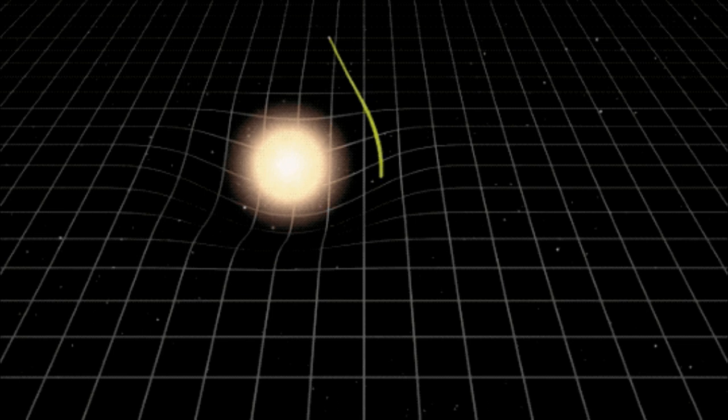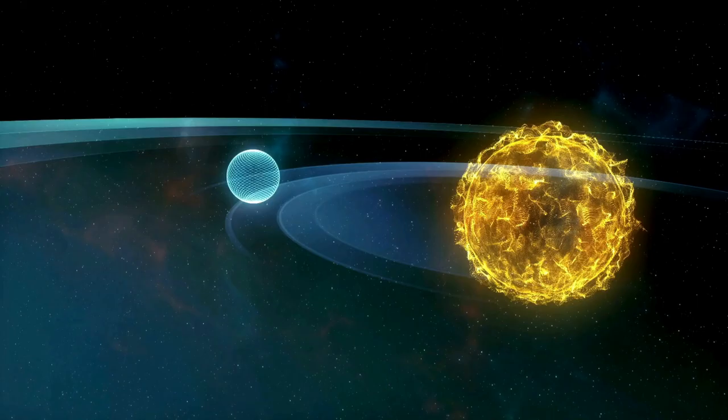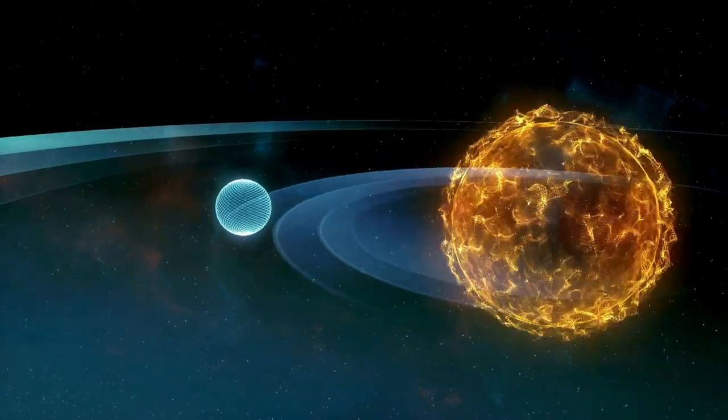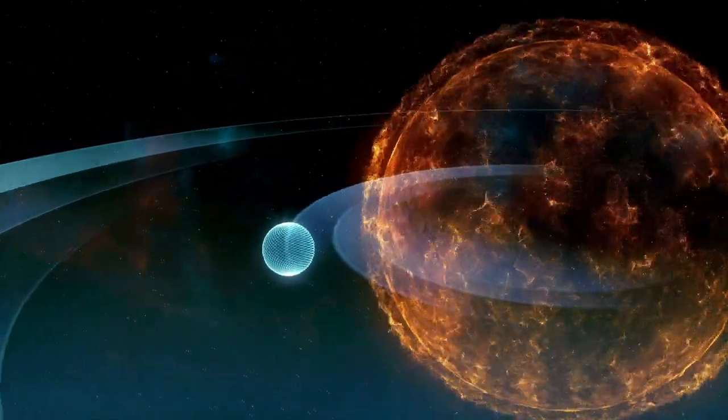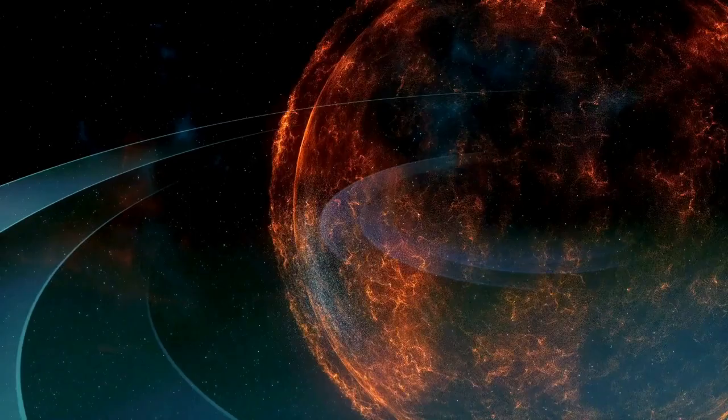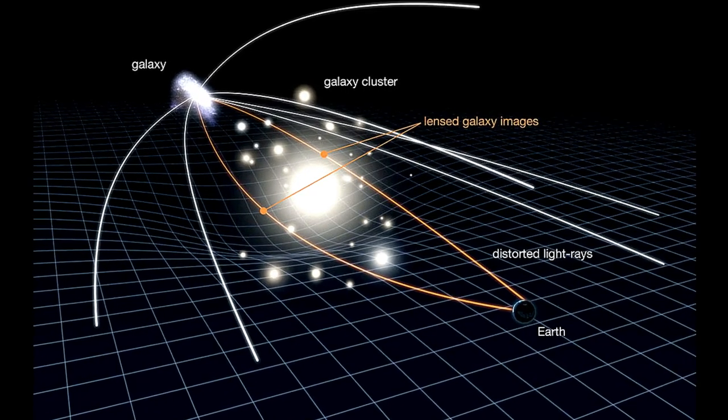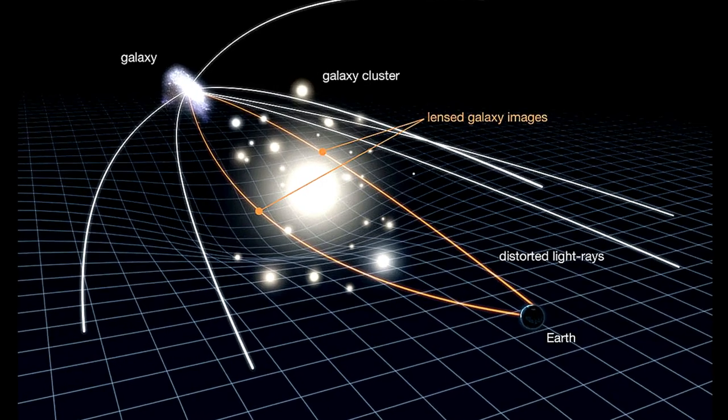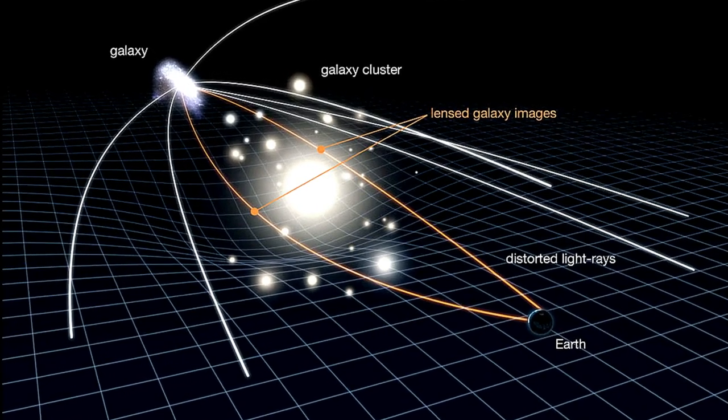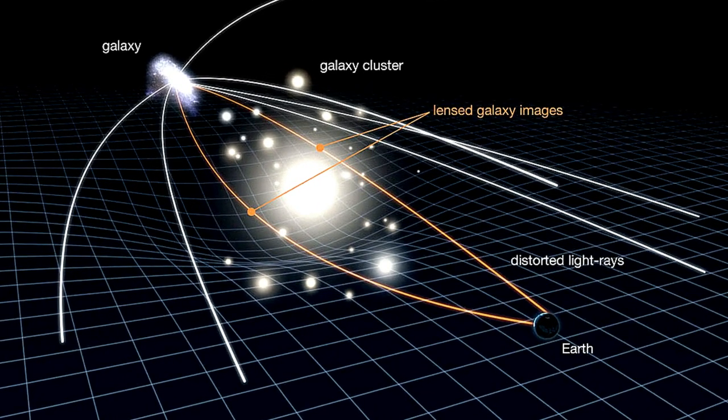Another significant prediction of general relativity is gravitational lensing. According to this theory, the curvature of space-time causes light to deviate from straight line paths, particularly when it encounters massive objects like the sun. For instance, it is anticipated that the light cones of points near the sun will be slightly bent inward due to the sun's mass. This implies that light from a distant star, if it passes near the sun, would be deflected by a small angle, making the star appear in a different position when observed from Earth.